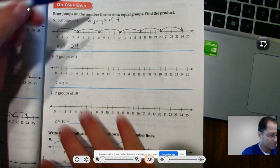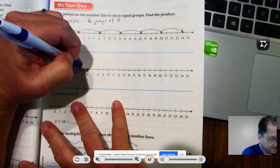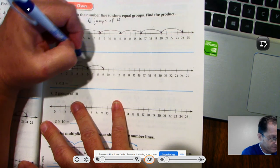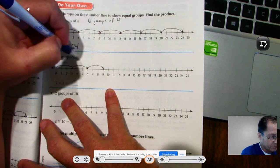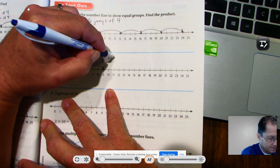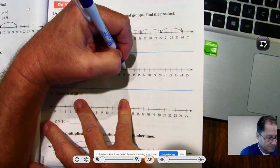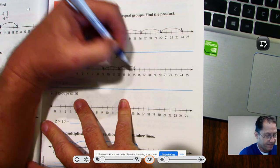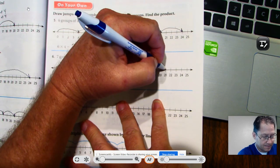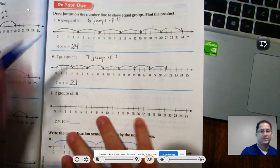7 groups of 3. There's 1 group of 3, second group of 3, third jump of 3. Let me back up here again. 7 groups of 3 again is the same as saying 7 jumps of 3: one, two, three, four jumps, five, six, seven. So 7 jumps of 3 is 21.